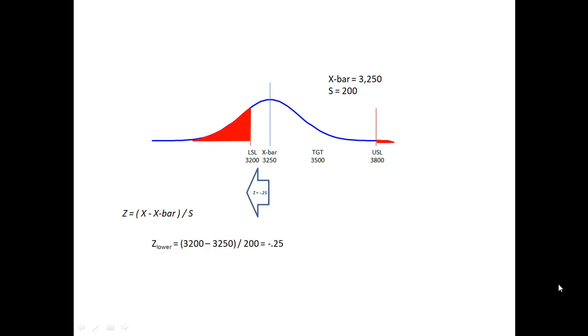It always helps if you draw the picture on these kinds of problems because the direction of the arrow tells me in advance that the value was going to be negative. For the upper z, I do the same thing only my arrow is going the other direction, so I expect it to be positive. My 3800 upper spec limit minus x-bar 3250 over 200 is an upper z of 2.75.